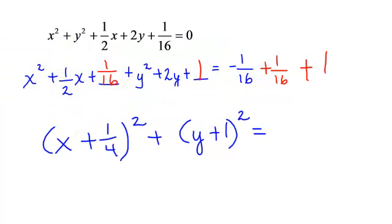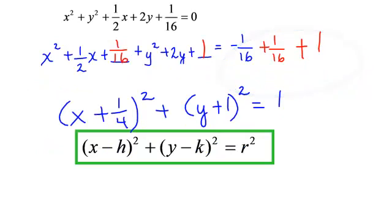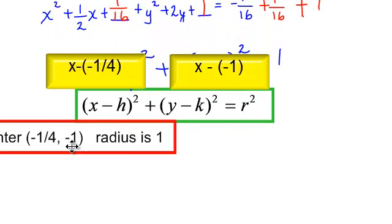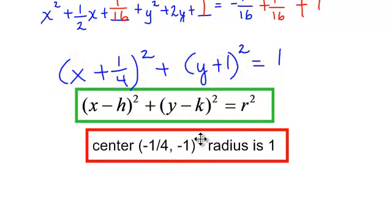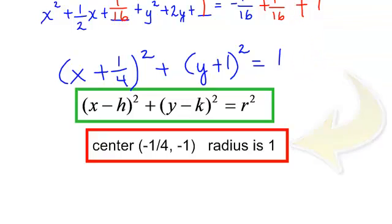And on the right side, I have negative 1 16th plus 1 16th plus 1. That will just be 1. So I do have this equation written to where I can easily see the center of the circle and the radius. The center will be negative 1 4th, negative 1. And the radius on the right side, I have 1, and the square root of 1 is 1. So the radius is 1.